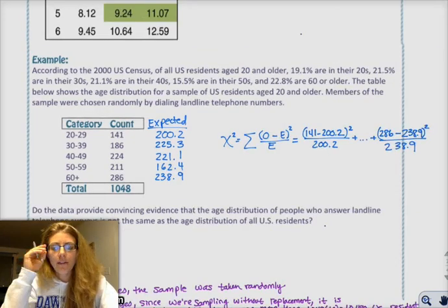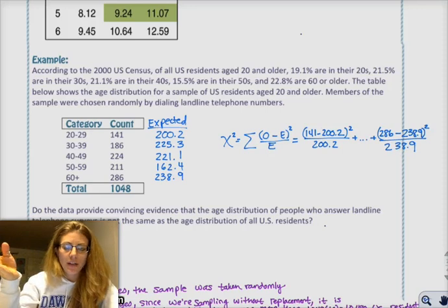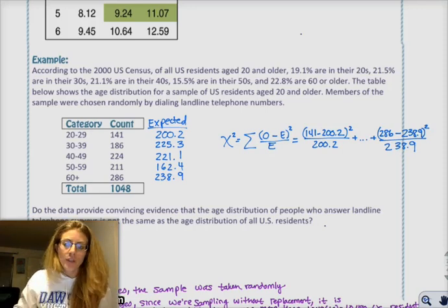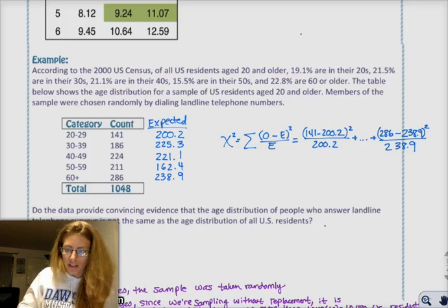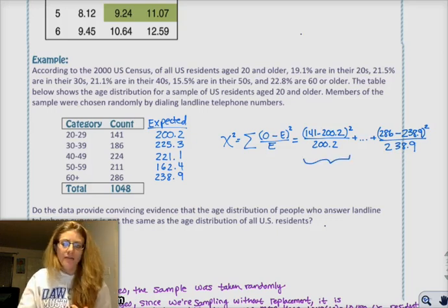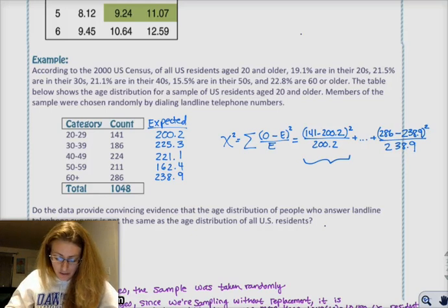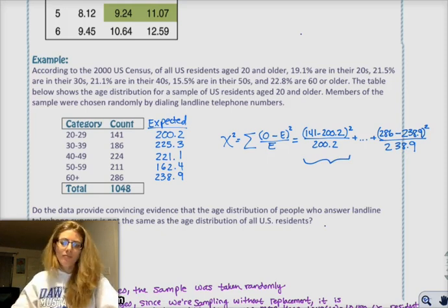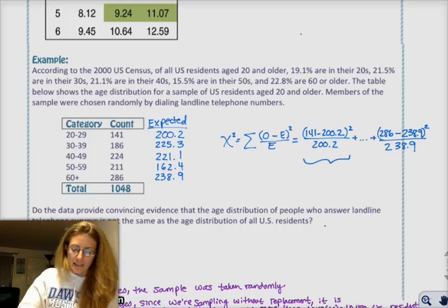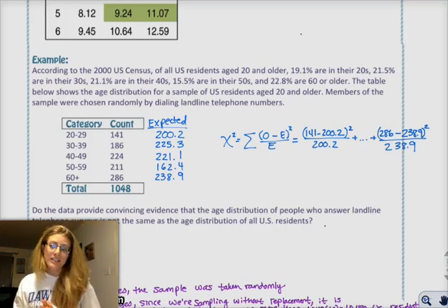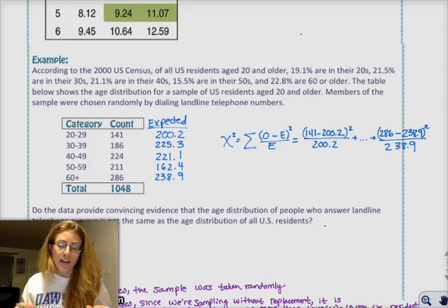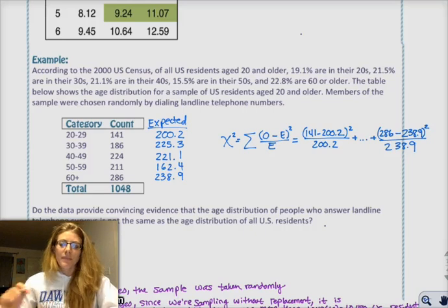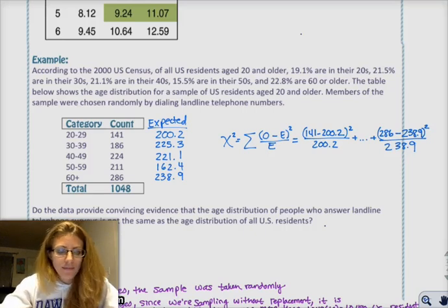So on the AP exam, if you are calculating chi-squared with your calculator, you can do something like what I've just written here, which is you write the first value with the numbers plugged in, your observed value minus expected squared over the expected, and then plus dot dot dot plus the last one. Basically what you're telling the AP readers is that I know what the chi-squared value is, and I'm just using my calculator to actually calculate it.